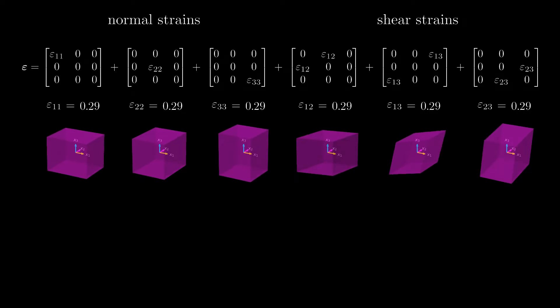We call the first three components, which are the diagonal elements of the strain tensor, the normal strains. And the other three components, which are the off-diagonal elements of the strain tensor, the shear strains.